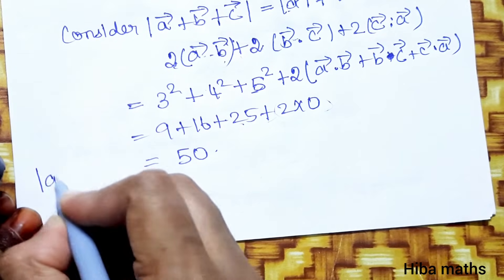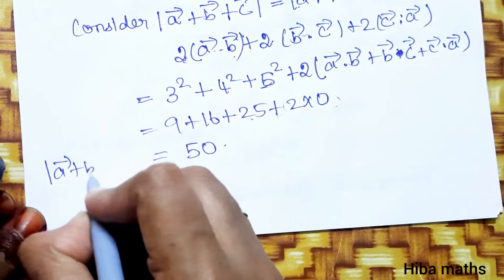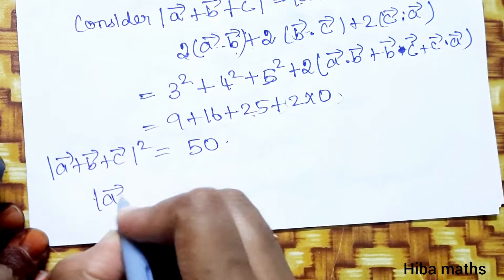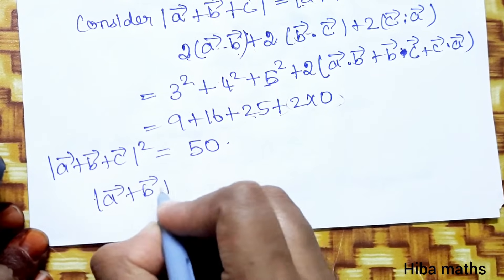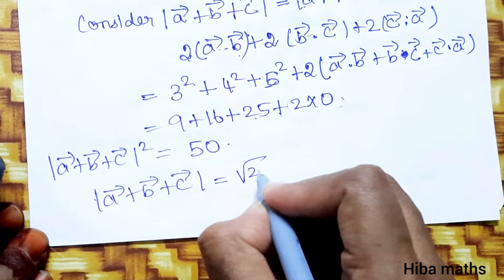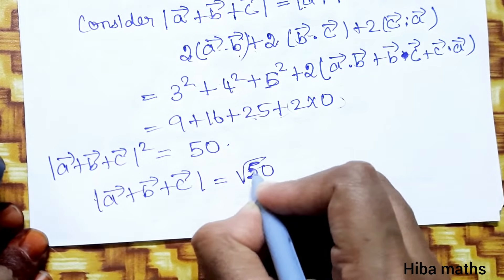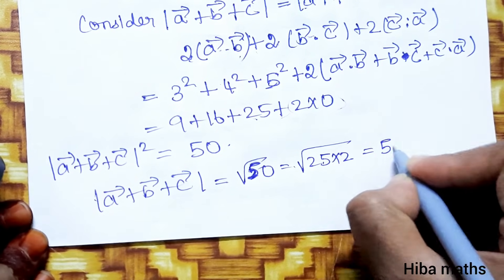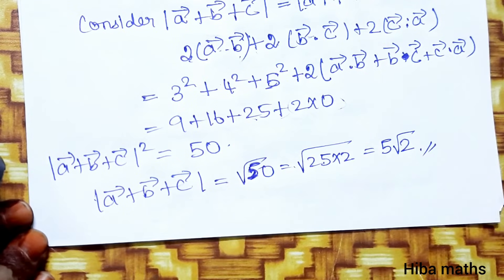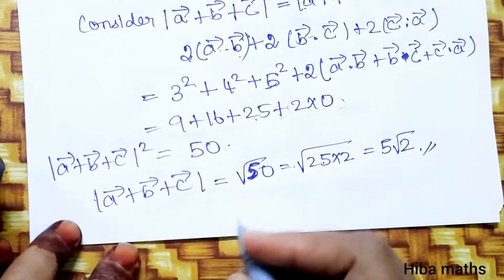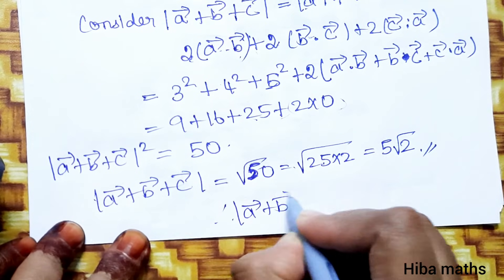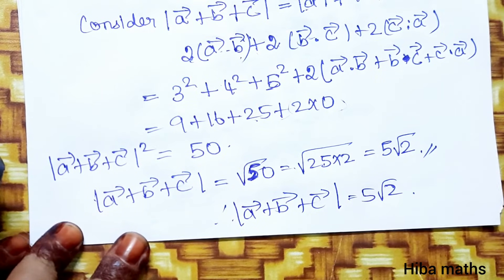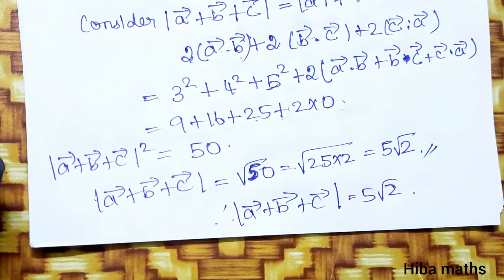So modulus of a vector + b vector + c vector whole squared equals 50. Taking the square root, modulus of a vector + b vector + c vector equals root of 50, which is root of 25 times 2, that is 5 root 2. This is the answer. Therefore, |a + b + c| = 5√2. Post your doubts in the comment section. Thank you so much for watching.